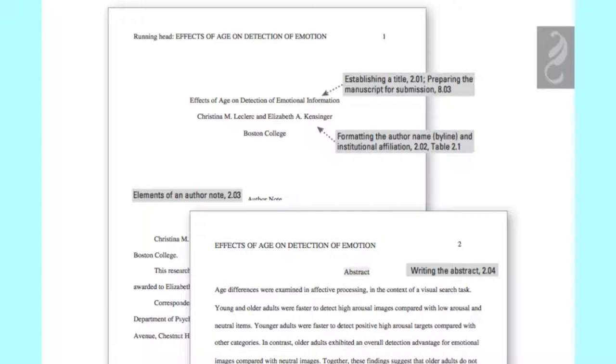As students, you won't typically need an author note, so we're going to skip over that section, but if you need that information, it's on page 24 of your APA handbook.